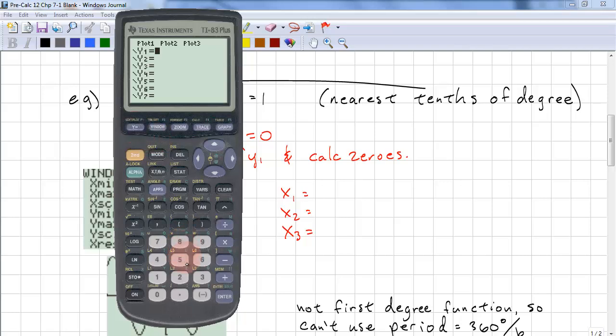So we enter 2 cos x squared. It's important to note here that we are not squaring the parameter, we're squaring the result of cosine. If you put the squared with the x rather than with the brackets, you're going to get a totally different result. So be careful of that. So we have 2 cos squared x minus 1, and we hit enter and we graph.